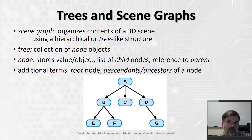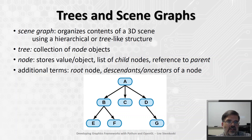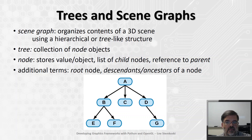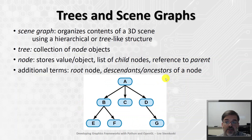At the heart of any graphics framework is something called a scene graph. It's a data structure that's used to organize the contents of a 3D scene using some kind of hierarchical or tree-like structure. In the context of computer science, a tree is a data structure that's a collection of node-like objects. Here we have a diagram of a tree structure with seven nodes.